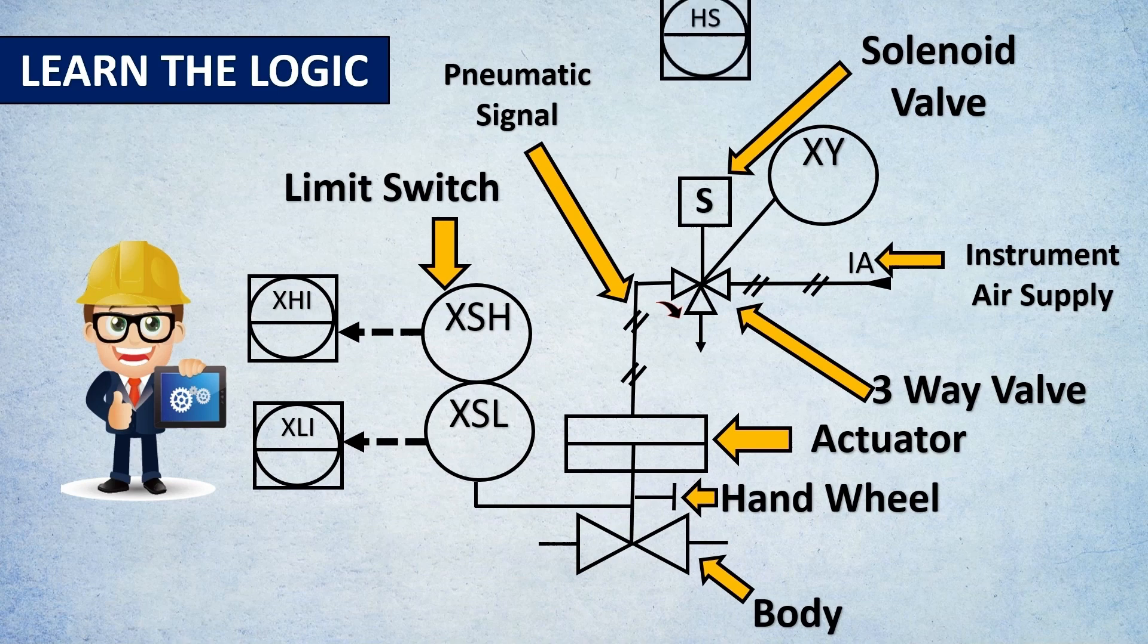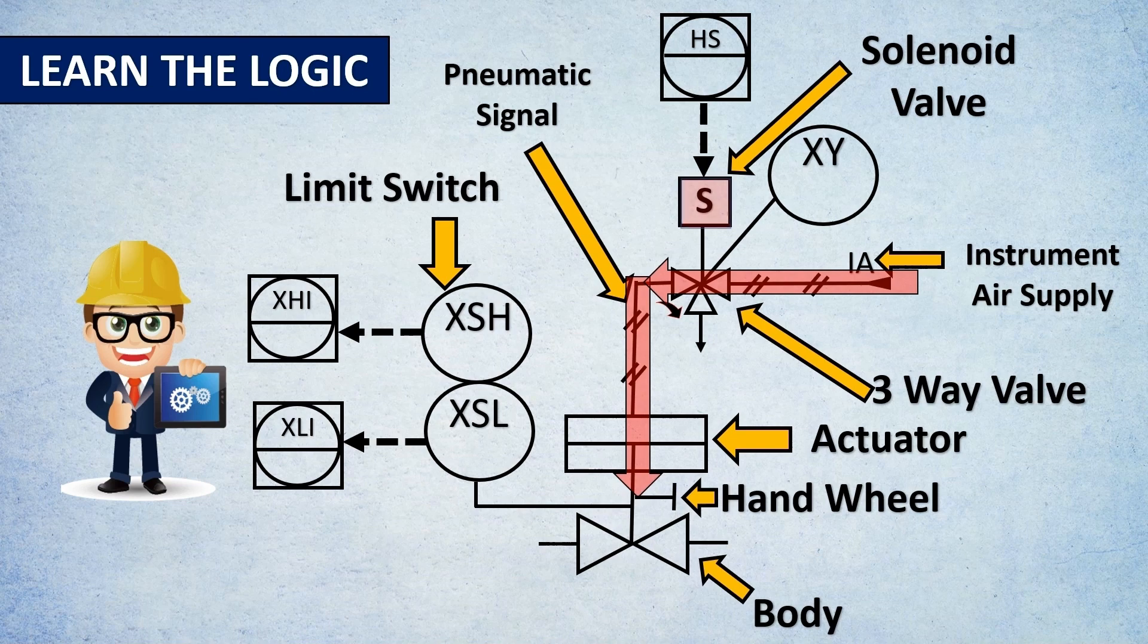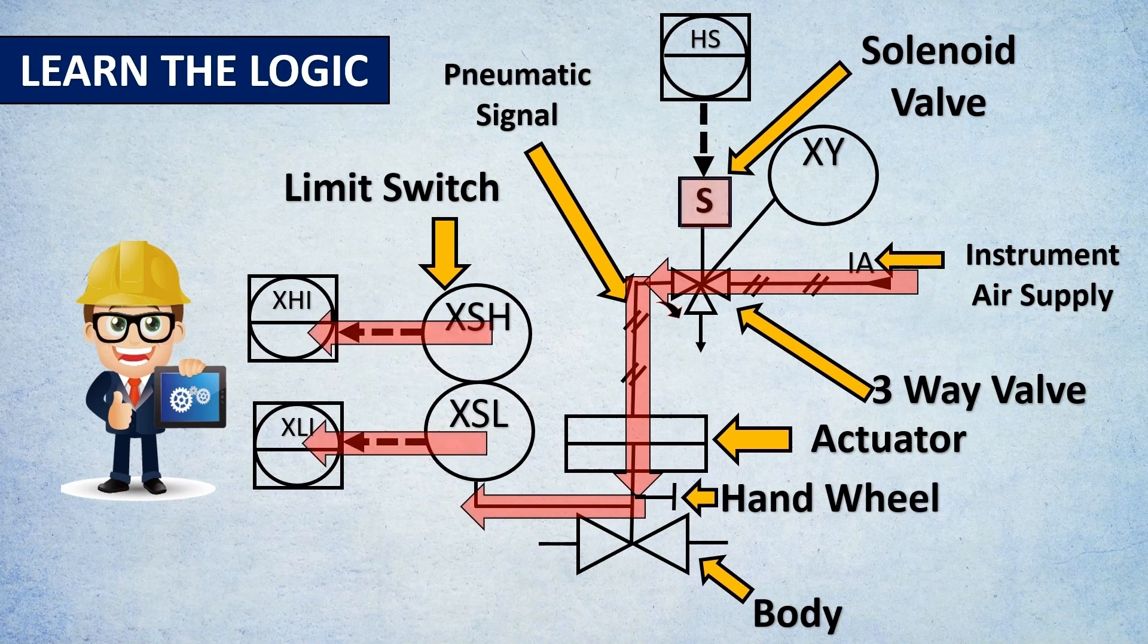The limit switch is there. When the operator presses the hand switch, the solenoid becomes active. Once the solenoid is active, the instrument air supply goes to your actuator, which actuates the valve. For our example, let's say it opens the valve. Then the limit switches show the operator that the valve has opened.